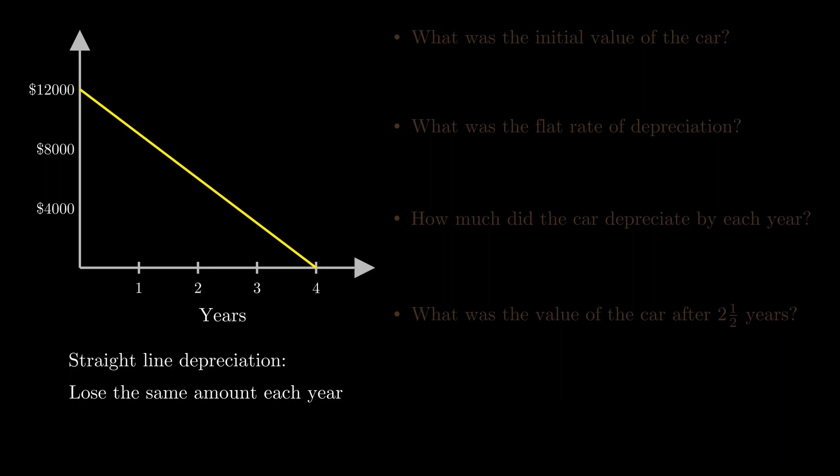And so again, like for simple interest, on the graph, this amount you lose every year has to correspond to a gradient. Because each time you go across by one, which means a year passes, the gradient would be a negative number for a line like this, because it would be telling you how much money you've lost. It's going down, so it's negative.